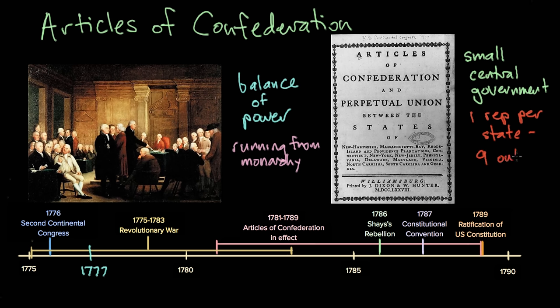For laws, you had to get nine out of 13 states to actually pass a law. So if you can imagine if you're in a room of 13 people and you all have to agree on one pizza topping for the rest of your lives, it would be almost impossible. So it sounds like there are some problems with the Articles of Confederation, but did they do anything good for us in this early period?